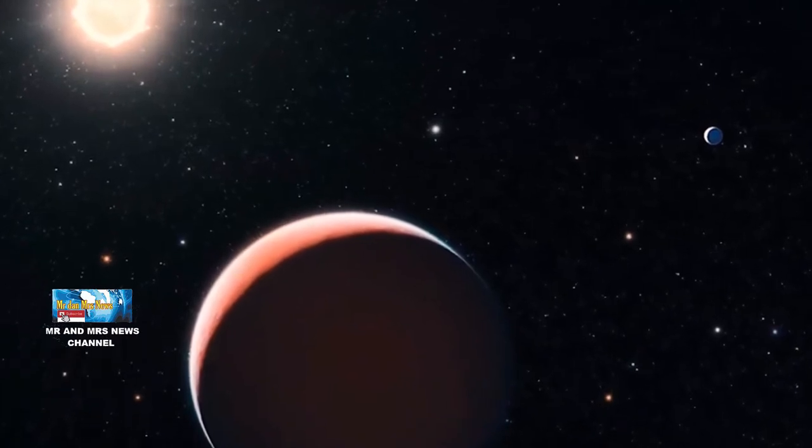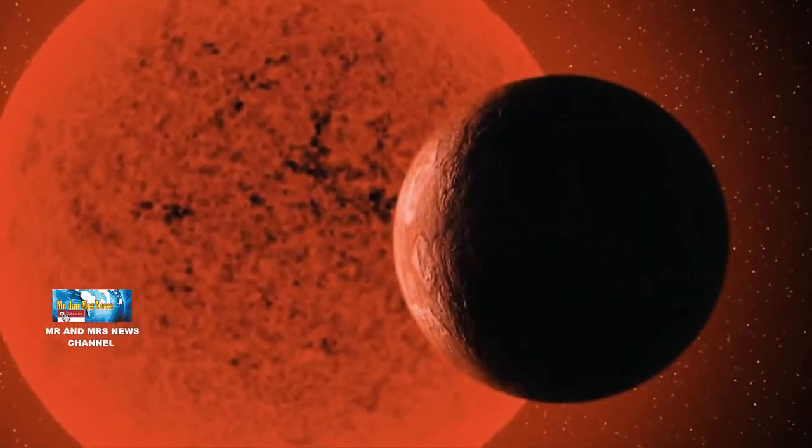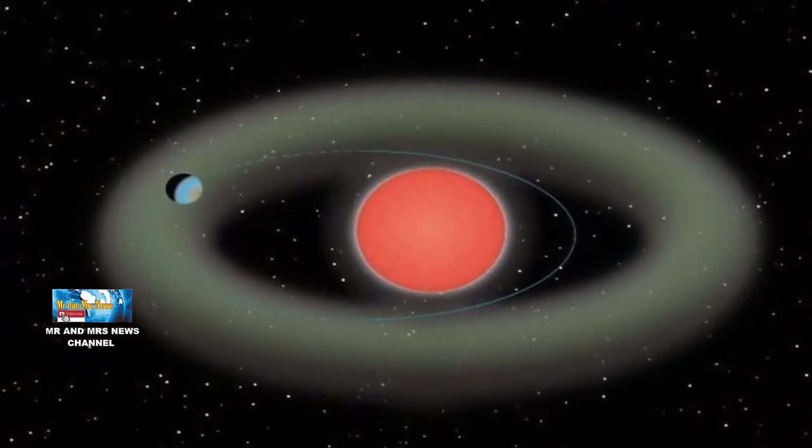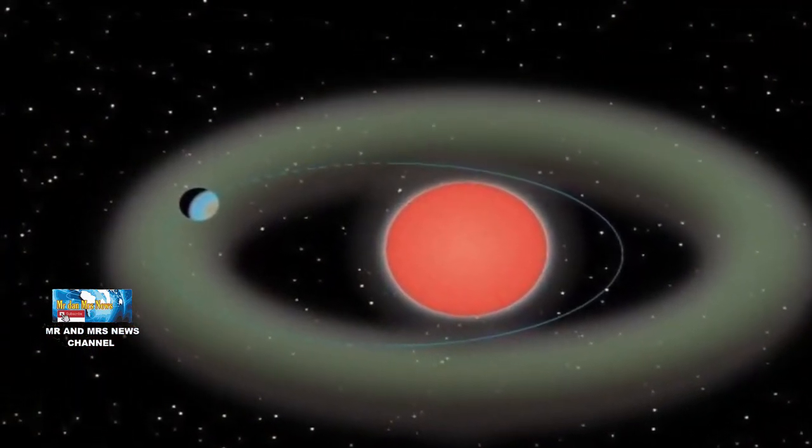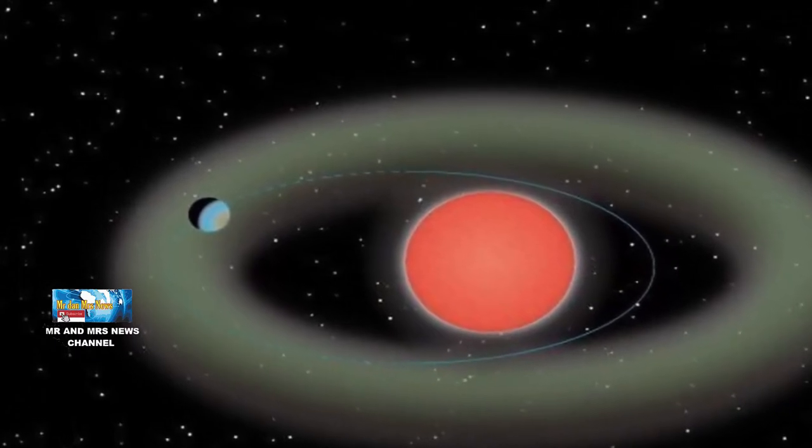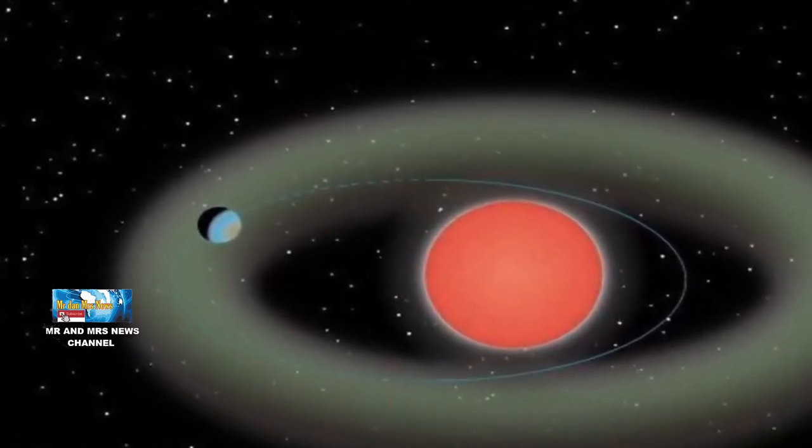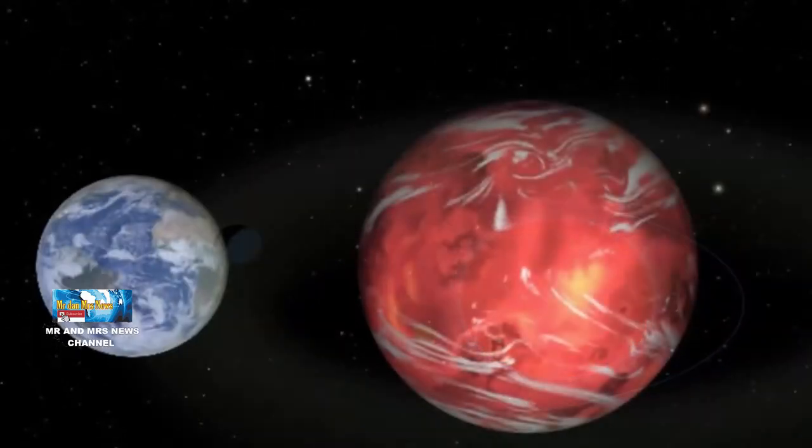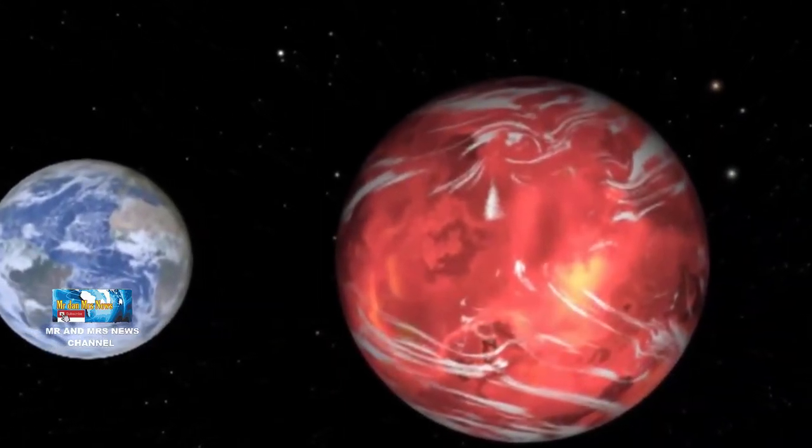Para astronom di Jepang pertama kali melihat Super Earth awal tahun ini pada bulan Mei. Sesuai penelitian, planet ekstra surya mengorbit bintang pada jarak yang menawarkan suhu kondisi untuk pembentukan air di permukaan planet. Ini menunjukkan bahwa ROS-508D berada di zona layak huni bintang tersebut.